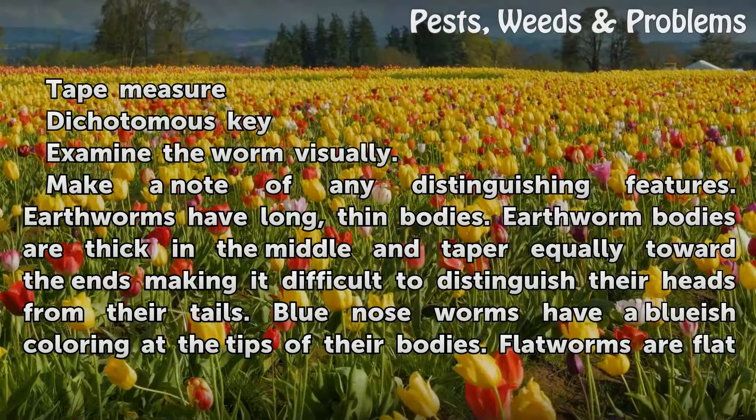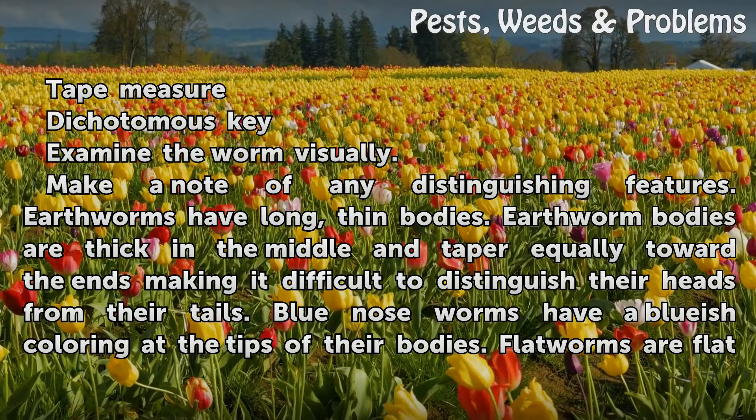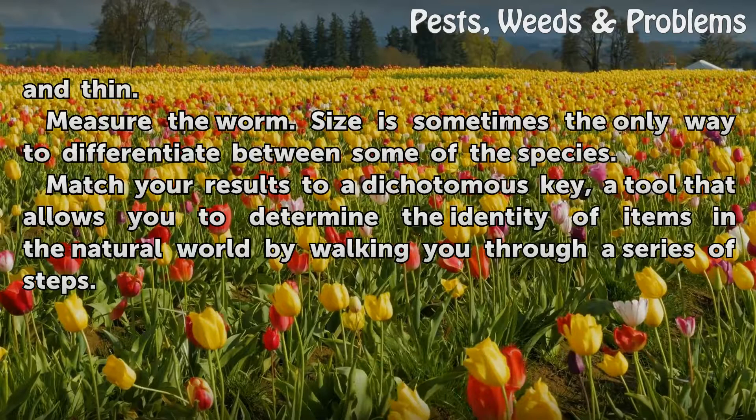Examine the worm visually and make a note of any distinguishing features. Earthworms have long, thin bodies — thick in the middle and tapering equally toward the ends, making it difficult to distinguish their heads from their tails. Blue nose worms have a bluish coloring at the tips of their bodies. Flatworms are flat and thin.